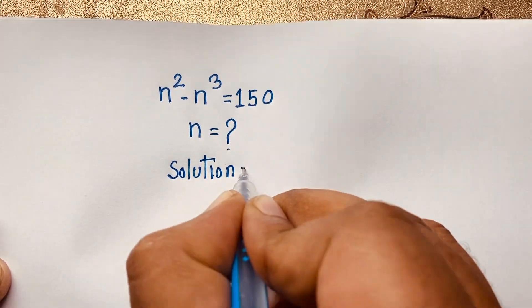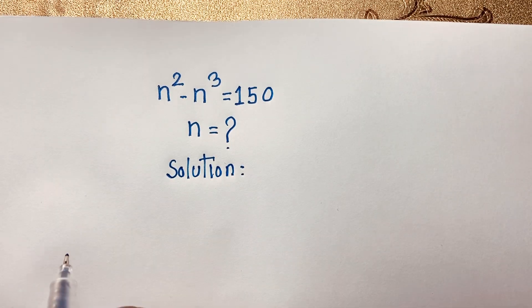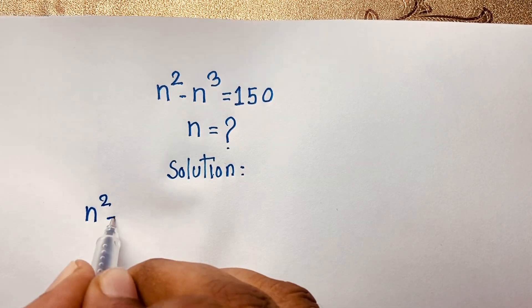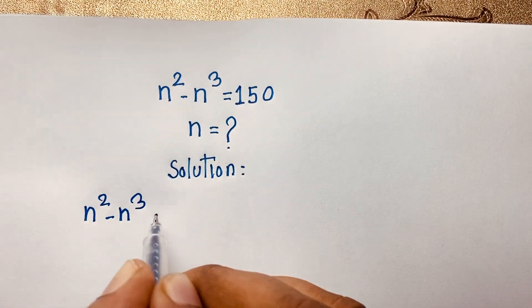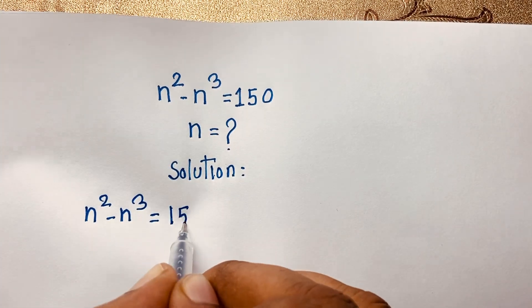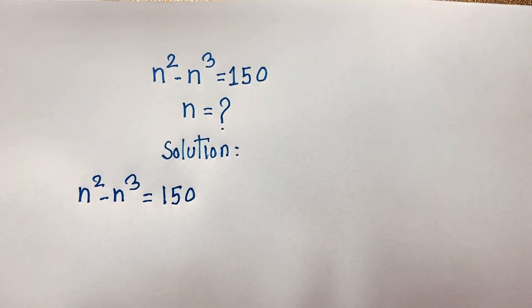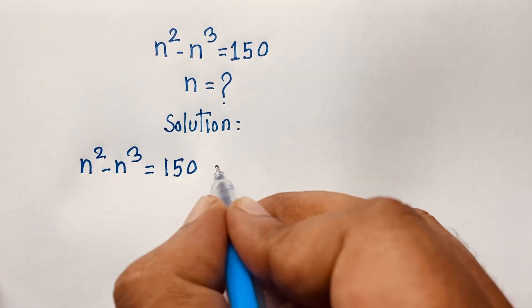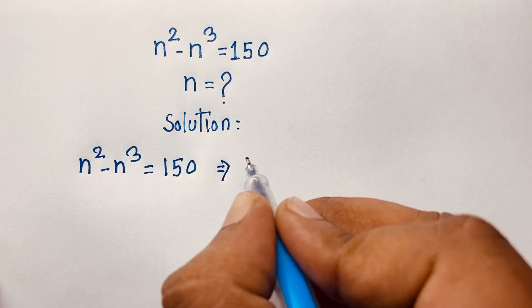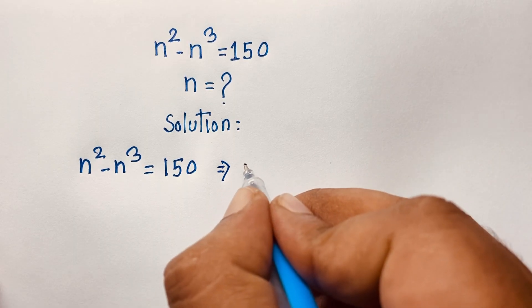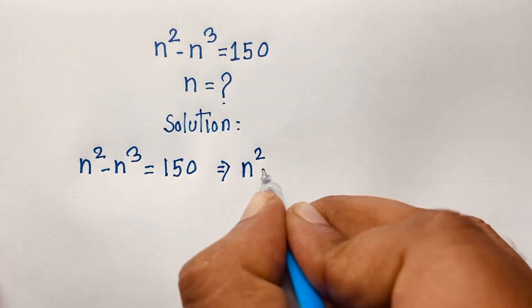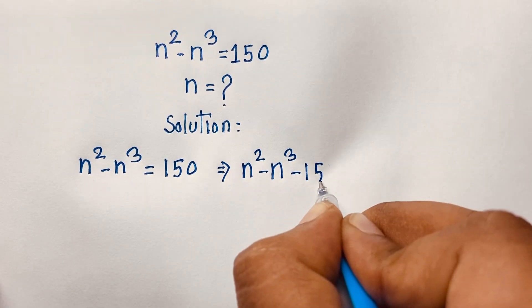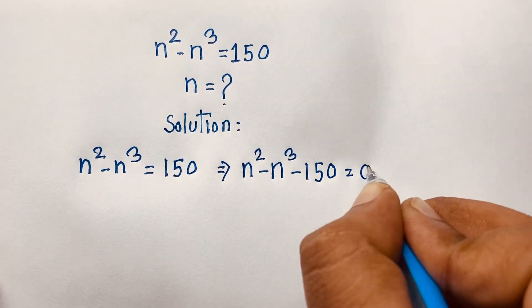Our question is n squared minus n to the power 3 is equal to 150. If I move the 150 to this side, it will be negative 150, so we get: n squared minus n to the power 3 minus 150 is equal to 0.